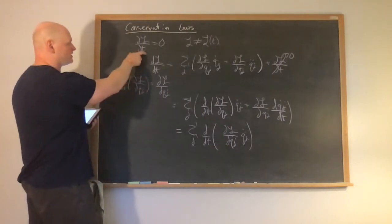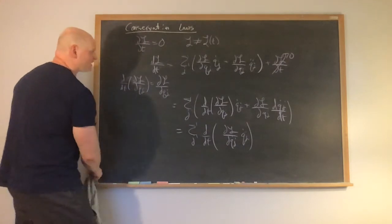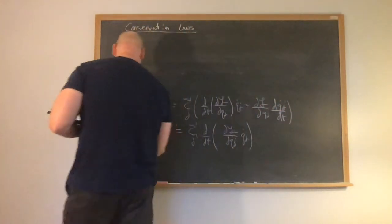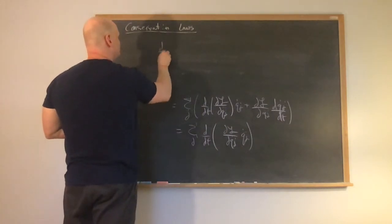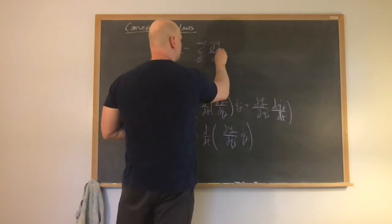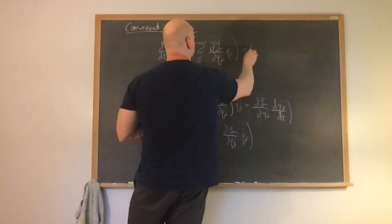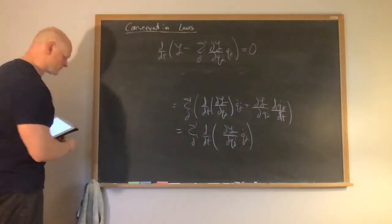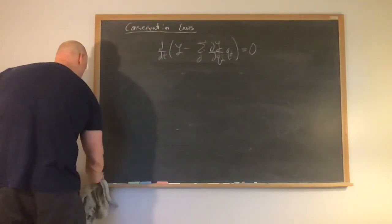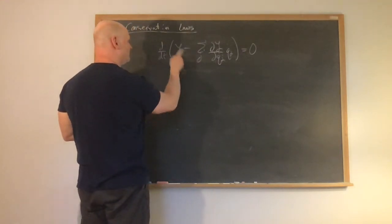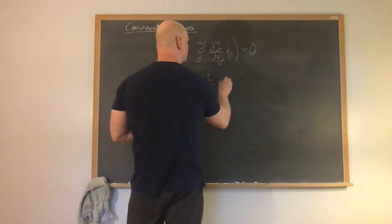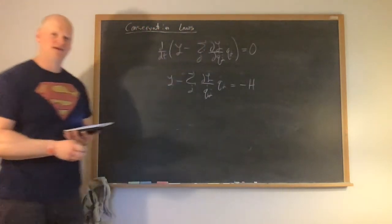Since on the left side we have a total derivative of the Lagrangian, we can subtract that term over, and then we can write this as d/dt of the Lagrangian minus the sum over j of (∂L/∂q-dot_j) times q-dot_j, is equal to zero. Since this is equal to zero, we can simply integrate, which means that this whole inside portion must be equal to a constant. So, integrating both sides, we can write: Lagrangian minus the sum over j of (∂L/∂q-dot_j) times q-dot_j equals some constant, which we'll write as negative h.